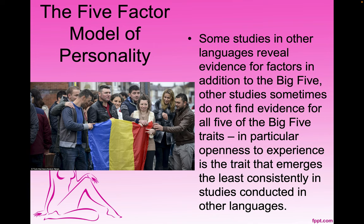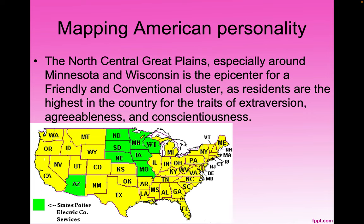The north-central Great Plains, especially around Minnesota and Wisconsin, is the epicenter for the friendly and conventional cluster, where residents score the highest in the country for traits of extroversion, agreeableness, and conscientiousness. The western states from Oregon down to Arizona house the relaxed and creative cluster, with the lowest neuroticism and the highest openness to experience.